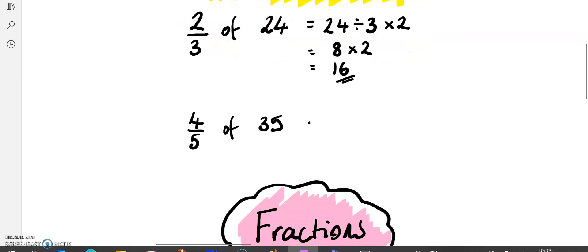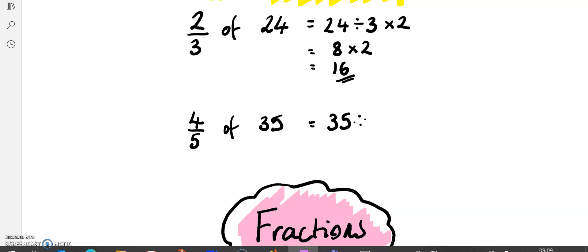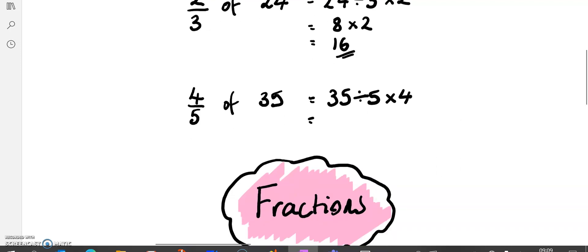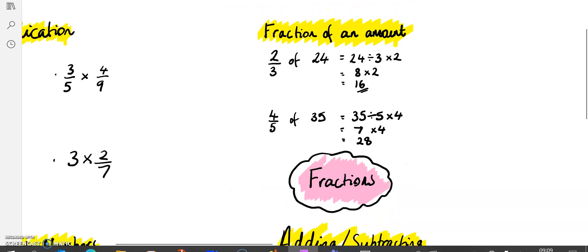Similarly here, 4 fifths of 35. We're thinking about fifths so we're going to divide 35 by 5, but we want 4 of them so we're going to multiply by 4. We divide by the denominator and times by the numerator. 35 divided by 5 is 7, so we're going to do 7 times 4 which will give us 28. That's how we're finding the fraction of an amount.